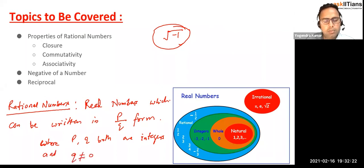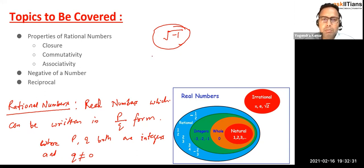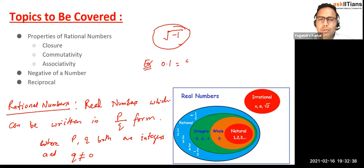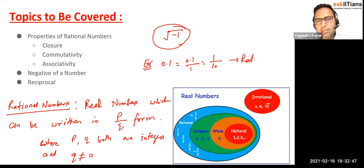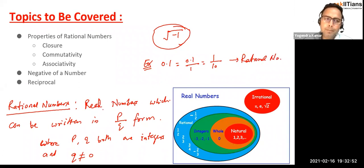Rational numbers are real numbers which can be written in p by q form, where p and q are both integers and q is not equal to zero, because the denominator cannot be zero. For example, 0.1 is a rational number because we can write it as 1 by 10, which is the p by q form. So 0.1 is a rational number.